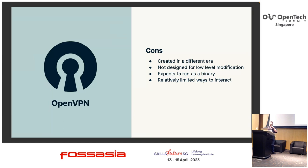OpenVPN expects to run as a binary. If you wanted to get this into an iOS or Android app, there was some surgery involved — it wasn't really designed with that in mind. There are also relatively limited ways to interact with it. If you want to control it as a binary, to start, stop, and get status information from it, that's more difficult to do. It does have some support for this, but you don't get full access — a lot of the time you'd need to look at logs.